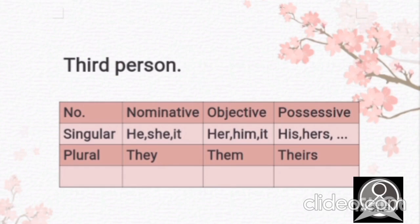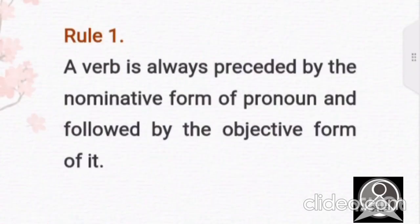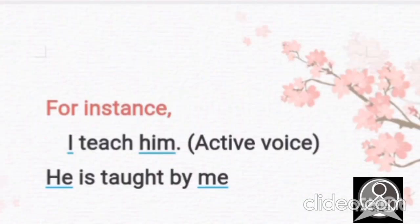Now let's know rule one. A verb is always preceded by the nominative form of pronoun and followed by the objective form of it. And here I would like to add that nominative form is also known as the subjective form. So let's have an example. I teach him. I teach him, I am studying him. This is the active voice.